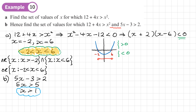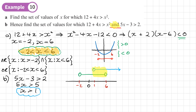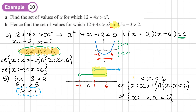I have x greater than 1 from this inequality, and x between negative 2 and 6 from part A. Because I have 'and', I'm looking for the overlap. Let me draw it on a number line: the interval negative 2 to 6, and then x greater than 1. The overlap of both inequalities is x between 1 and 6 — so greater than 1 and less than 6. The solution in set notation is given as well.